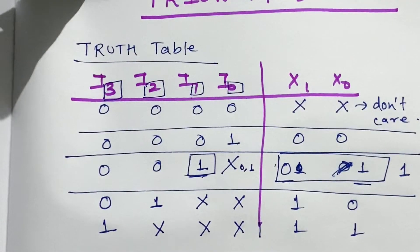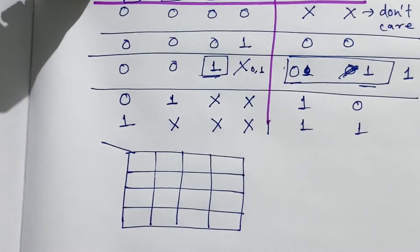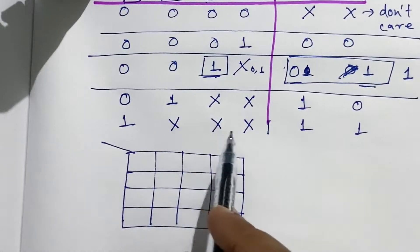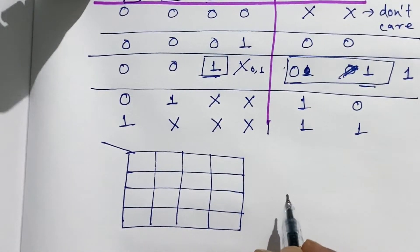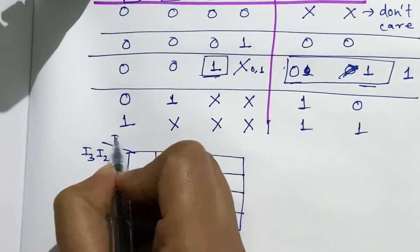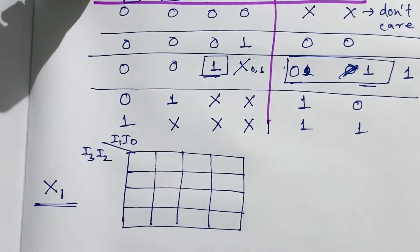So this was the 4-to-2 priority encoder, and I hope the difference between the normal 4-to-2 encoder and the priority encoder is clear. Now we will see its circuit design. Since we have 2 output lines (x1 and x0) and 4 input lines, we have to make a 4-variable K-map for both output lines. Here we write i3, i2 on one axis and i1, i0 on the other.